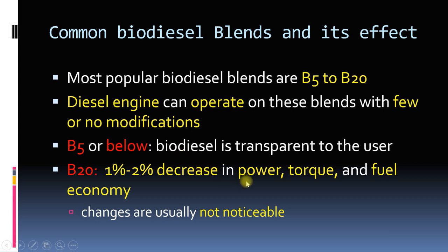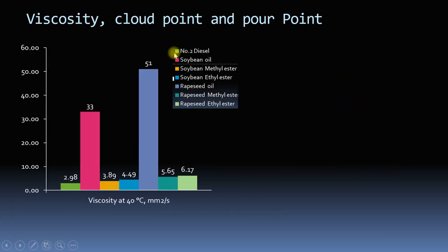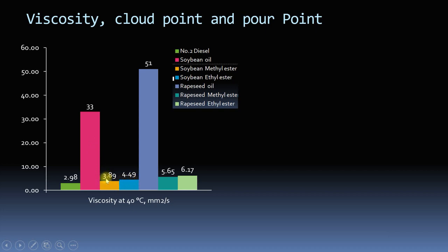Let's look at some properties explaining why we can use up to B20. This diagram shows viscosity for seven different fuels: diesel, soybean oil, soybean methyl ester, soybean ethyl ester, rapeseed oil, rapeseed methyl ester, and rapeseed ethyl ester. The viscosities of the raw oils — soybean oil and rapeseed oil — are very high. We do not use vegetable oil in diesel engines because of this high viscosity.